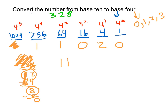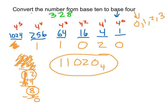So our number in base 4 is 1, 1, 0, 2, 0. If we wanted to talk about 328 objects, that's the same as the number 11020 in base 4. Because each place value represents a different power of 4: the 1s place, the 4s place, the 16s, the 64s, the 256s. We figure out the value of each column and then place the digits 0, 1, 2, and 3 to represent the number 328.